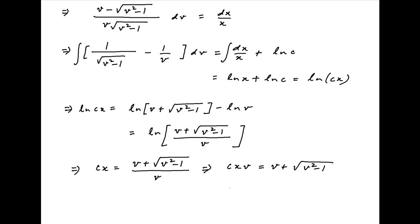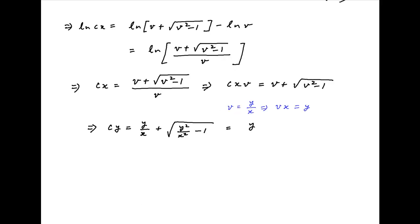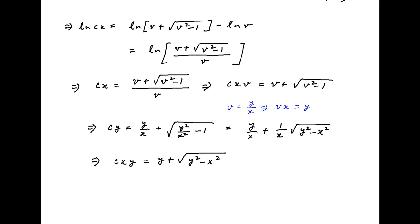Now replacing v with y upon x, we get cy equal to y upon x plus the square root of y squared upon x squared minus 1, which equals y upon x plus 1 upon x times the square root of y squared minus x squared. Multiplying both sides by x gives cxy equals y plus the square root of y squared minus x squared, which is the required solution to the given differential equation.